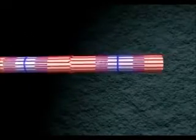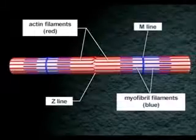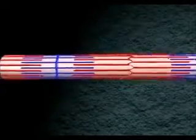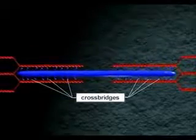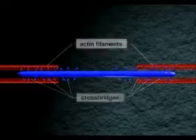Each myofibril is composed of many actin and myosin filaments. Projections from the myosin filaments, the myosin cross bridges, interact with sites on the actin filaments to produce contraction.